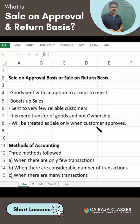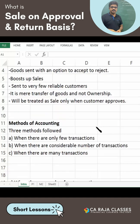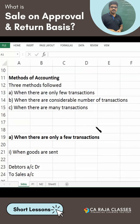What is our discussion in this concept? Basically, we are going to focus on the methods of accounting. There are three methods of accounting and it depends upon the number of transactions. When there are only a few transactions, we have one method; when there are a considerable number, a second method; and when there are many transactions, we have a third method. We will be understanding each method in the subsequent sessions.